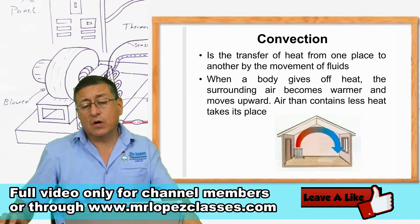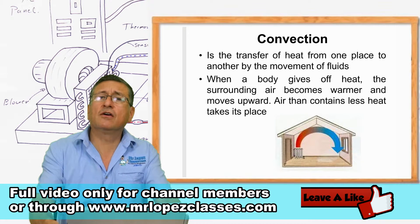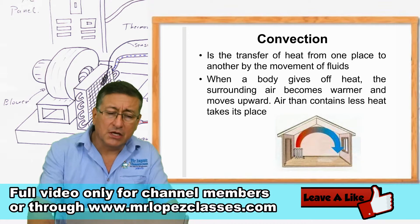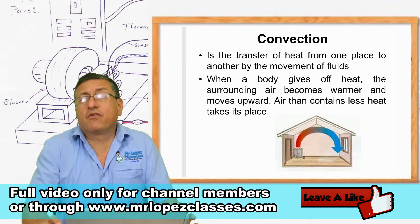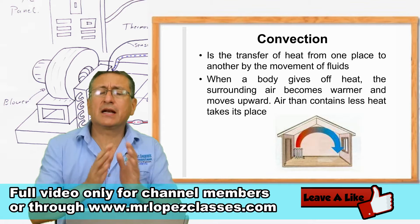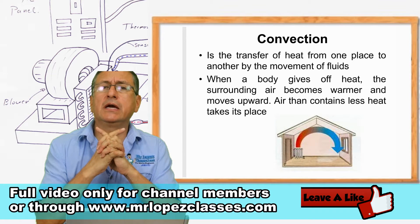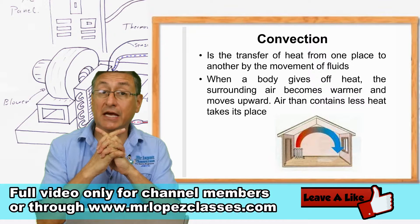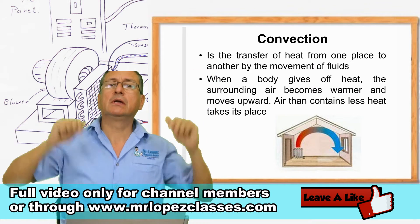We are going to analyze the first one. What is the meaning of convection? It's the transfer of heat from one place to another one. Remember what happens with the air when the air is hot — the air goes up.